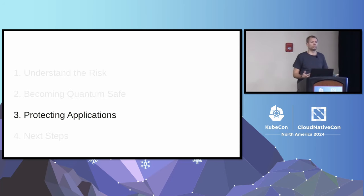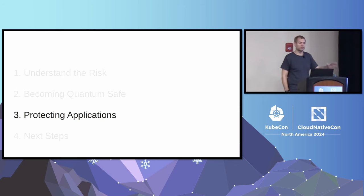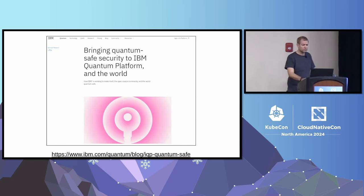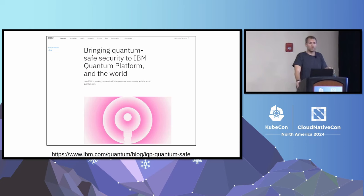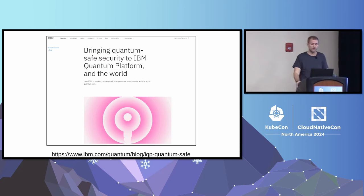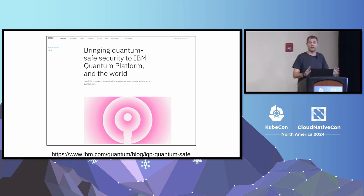Let's look at this practically. How can we actually do this? In the keynote they mentioned this is 10 years of work for Kubernetes — I'm going to show some things we have working that you can use today or in the near future. The background is that we spent a lot of time putting this into our IBM Quantum Platform, which is Kubernetes-based and allows you to run quantum workloads and access our quantum processing units on the cloud.